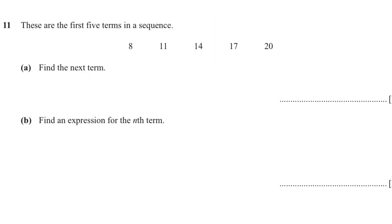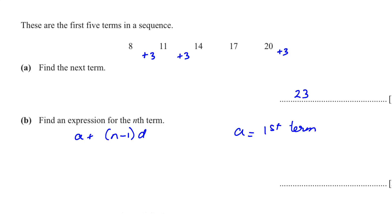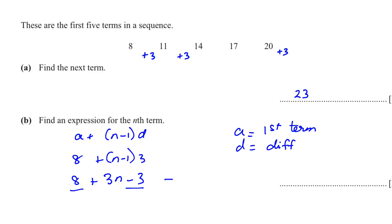Question number eleven is a sequence question. We have been given five terms and need to find the next term. The difference between terms is 3, so 20 plus 3 equals 23. For part b, find an expression for the nth term. This is an arithmetic sequence. Using the formula a + (n − 1)d, where a = 8 and d = 3: expanding gives 3n − 3 + 8, so the nth term is 3n + 5.